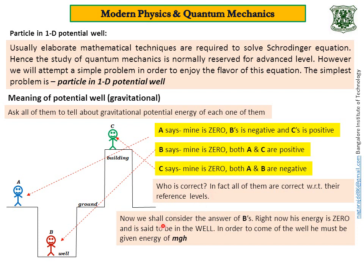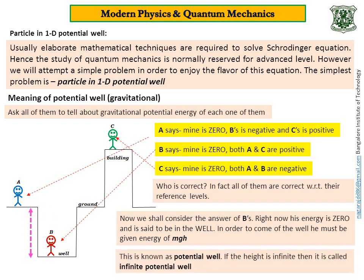This is quite important. We shall consider B's answer. He is at the 0 level and his energy is 0, and therefore he is said to be in the well. In order to come out of this well, he must be given extra energy of MGH, where H is the height of the well, M is mass of the person, G is acceleration due to gravity, and H is depth of the well. Unless you give that extra energy, B cannot come out. This is known as a potential well. If the height of the well is finite, it is a finite potential well; otherwise, it is an infinite potential well.